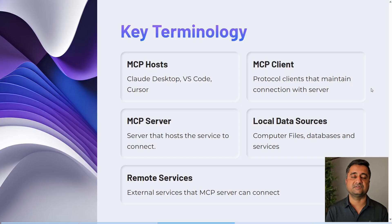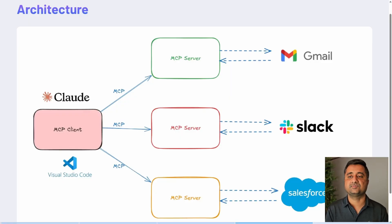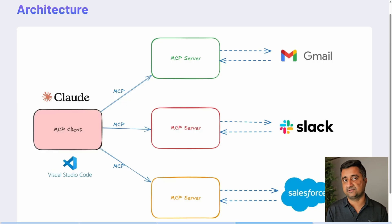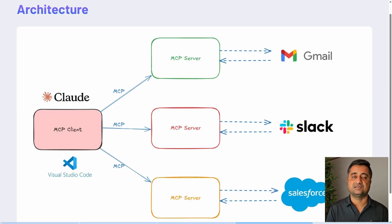For the architecture, you can see the MCP client being Claude Desktop or Visual Studio Code, and then you have different types of MCP servers — in this case taking the example of Gmail, Slack, or Salesforce. Anytime you put in a prompt, it goes to the MCP client, which talks back to the MCP server using the Model Context Protocol to a dedicated service, gets the data it needs, gives it back to the LLM, and that converts it back into a human readable format.